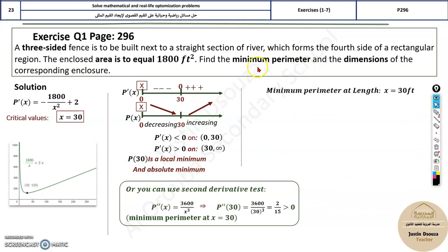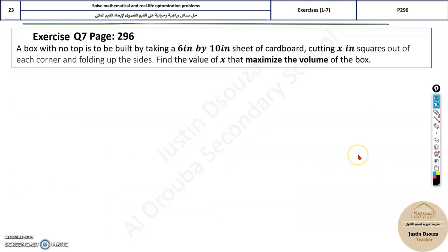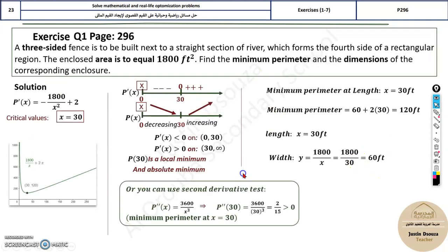So, we wanted minimum perimeter itself. So, the length is x is equal to 30 feet. Then, we can find the width. Because we know it's 1800 divided by x. So, width is 60 feet. So, this is how we can easily solve the problem. I hope you understand this. It's all these steps.